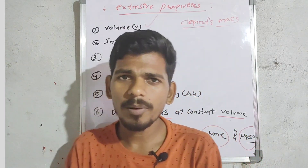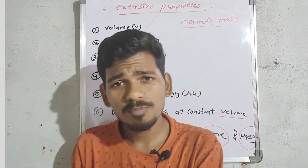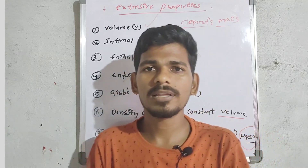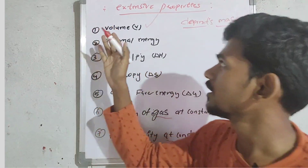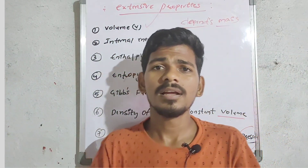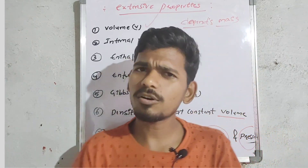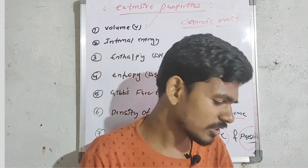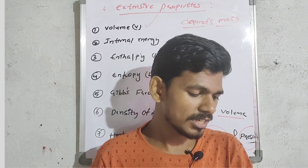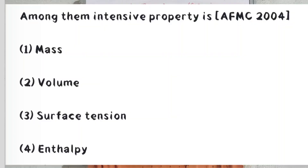So from the options: Volume is an extensive property, while Temperature, Density, and Internal pressure are intensive properties. That's how you identify the answer to this type of question. Next question from AFMC 2004: Which among the following is an intensive property?